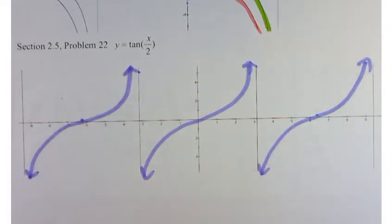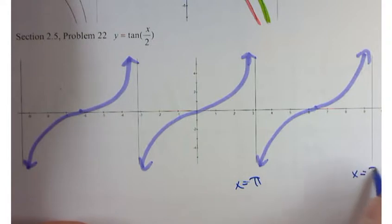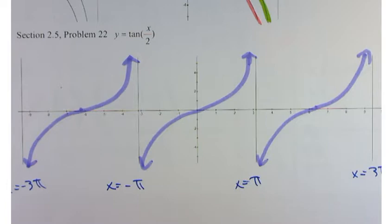And so on. I'm just looking for the basic shape and the proper asymptotes. So the asymptotes are already drawn for you. We've got them at x equal π, x equal 3π, negative π, and negative 3π. And there's your graph. So it's not a whole lot different than what we were doing for the secant and the cosecant. Are we okay with problem number 22 here?